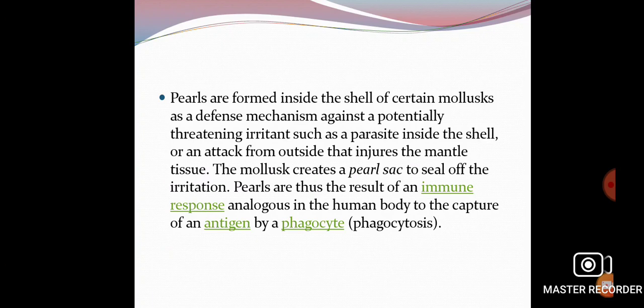Pearls are formed inside the shell of certain molluscs as a defense mechanism against potentially threatening irritants such as a parasite inside the shell, or an attack from outside that injures the mantle tissues. Pearl formation is nothing but a physiological mechanism. The body of Oysters is covered by shell, and inside the shell there is another thick muscular membrane called the mantle. When any object, foreign particle, or parasite attaches to the mantle, the mantle secretes a sticky substance which is called the nacre layer.